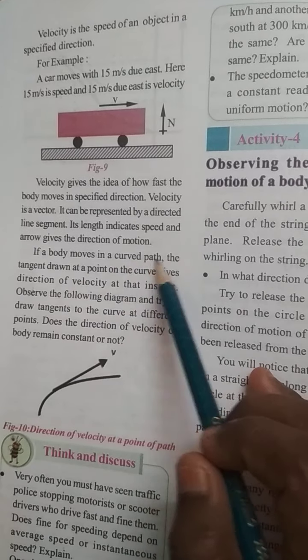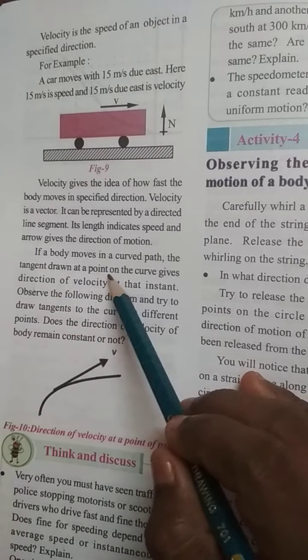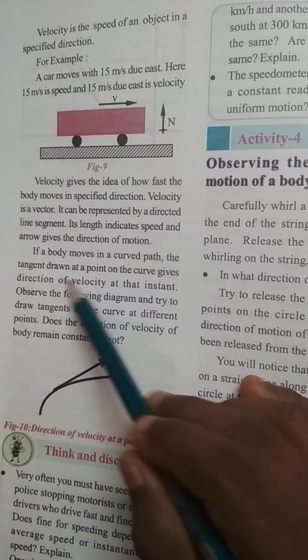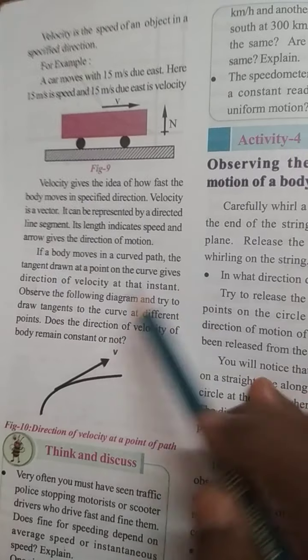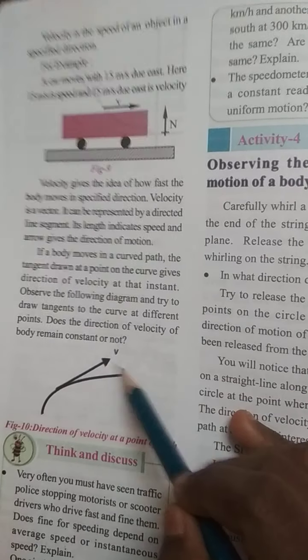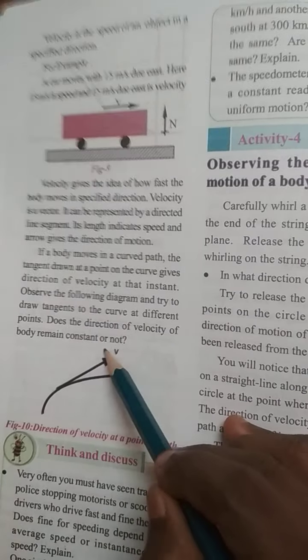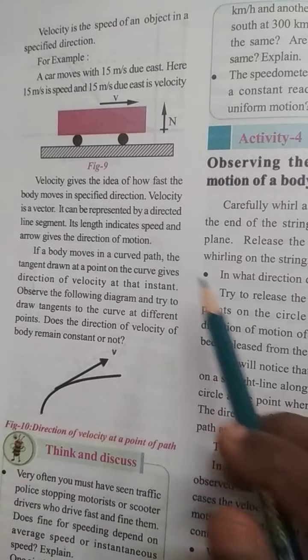If a body moves in a curved path, the tangent at a point on the curve gives direction of velocity at that instant. Moving in a curved path, its tangent is actually showing velocity. Observe the diagram and try to draw tangents at different points. Does the direction of velocity of a body remain constant or not?